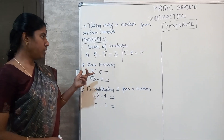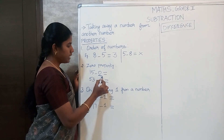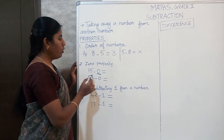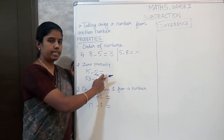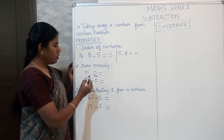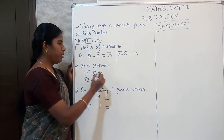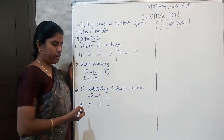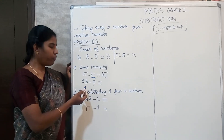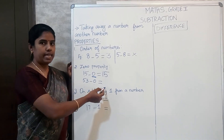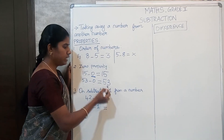Now let us move on to the second property of subtraction, which is the zero property. As you all know, 0 means nothing — 0 doesn't have a value. So if we take away 0 from any number, we get the same number as the answer or difference. For example, 15 minus 0 is 15, and 53 minus 0 is 53. Whatever the number, if we subtract 0 from it, the same number is the difference.